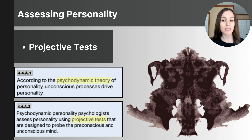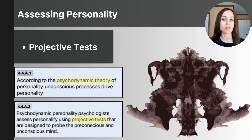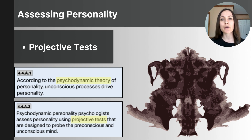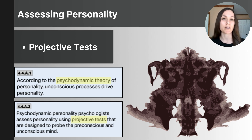The Rorschach inkblot test is an example of a projective test, created by Swiss psychologist Hermann Rorschach in 1921. It involves showing a subject a series of inkblot images and asking them to describe what they see and why. It's important to note that Rorschach tests have been criticized for being unreliable in their results due to the varying interpretations that psychotherapists have when analyzing responses.